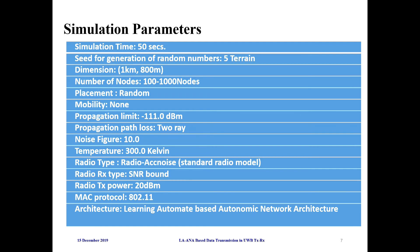The propagation limit was set to minus 111 dBm, propagation path loss model was 2-ray, and noise figure was limited to 10 dB. Temperature was set to 300 degrees Kelvin, radio type is radio acoustic noise which is SNR bound, transmitted power was 20 dBm, the MAC protocol standard was 802.11g, and the architecture uses a running automata-based autonomic network architecture.